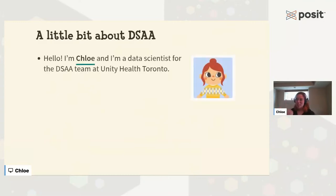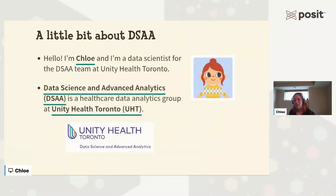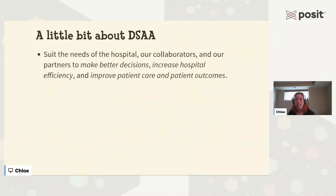Hi everyone, I'm Chloe, and I'm a data scientist for the DSAA team at Unity Health Toronto. DSAA, or the Data Science and Advanced Analytics, is a healthcare data analytics group at Unity Health Toronto, also known as UHT. DSAA's aim is to work with our collaborators and partners to make better decisions, increase hospital efficiency, and improve patient care and patient outcomes. Because we're working in the hospital, the projects we work on require process and change management, which is why we work directly with clinicians and administrative decision makers to develop and deploy our solutions.